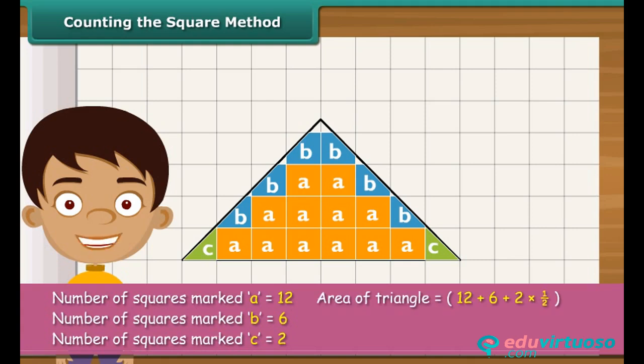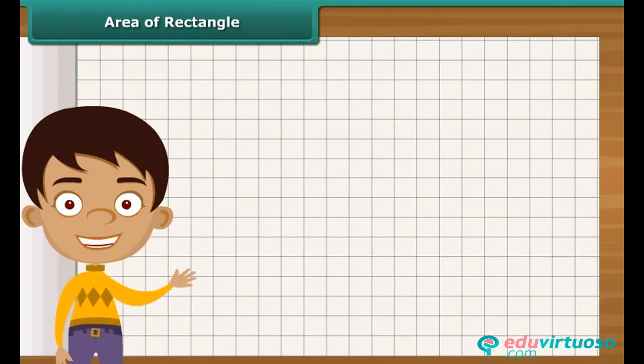The area of triangle is 19 square centimeters. Let us find the area of a rectangle by counting squares.